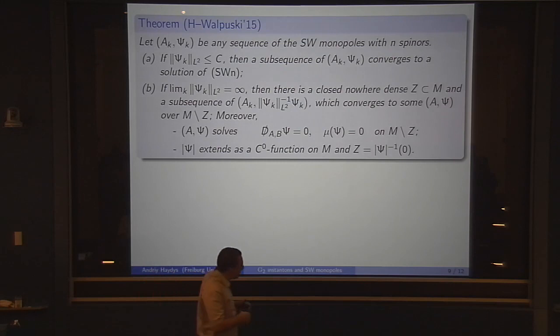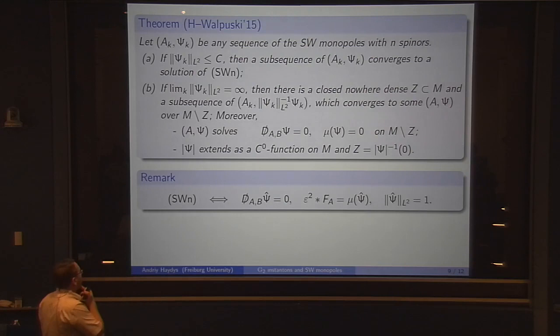But we have also another case. It can happen that your spinor goes to infinity, described by case P. In that case, you can't get anything convergent. But we can find a nowhere dense set Z in M and a subsequence such that if you renormalize your spinors to have norm 1 in L^2, this converges to some limit (A, psi) on the complement of Z. Moreover, this limit satisfies equations which look very similar to the original equations. The only difference is that the curvature term is killed. If you take the pointwise norm of the spinor, this extends to a C^0 function on all of M, and Z is precisely the zero locus of this function.